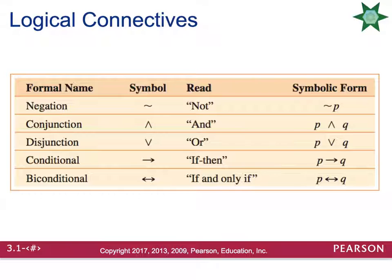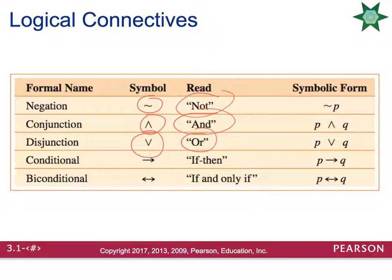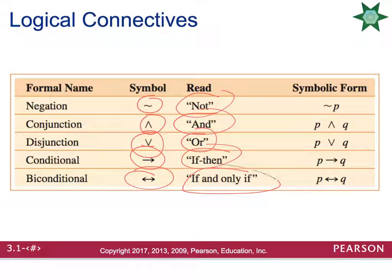This last slide is an overview of all the symbols we have learned. Negation is ~ (not). Conjunction is ∧ (and). Disjunction is ∨ (or). Conditional is → (if-then). Biconditional is ↔ (if and only if). Good luck on your homework — let me know if you have questions!